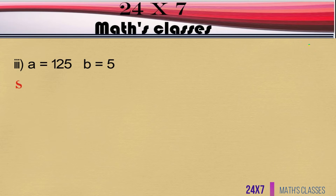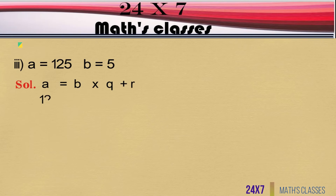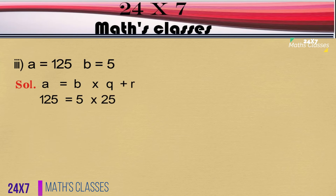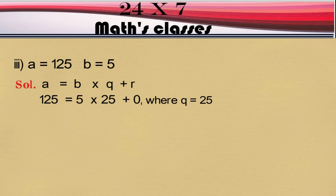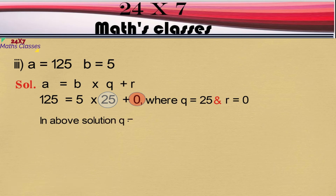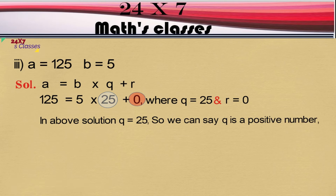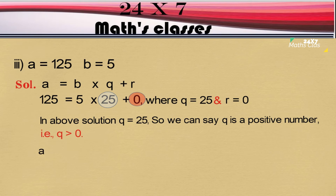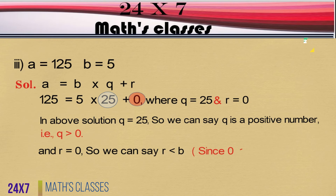Now we solve the third problem. After dividing 125 by 5, we can write it as 125 = 5 × 25 + 0, where q is equal to 25 and r is equal to 0. In the above solution, q is equal to 25, so we can say q is a positive number, that is q > 0, and r is equal to 0, so r < b since 0 < 5.